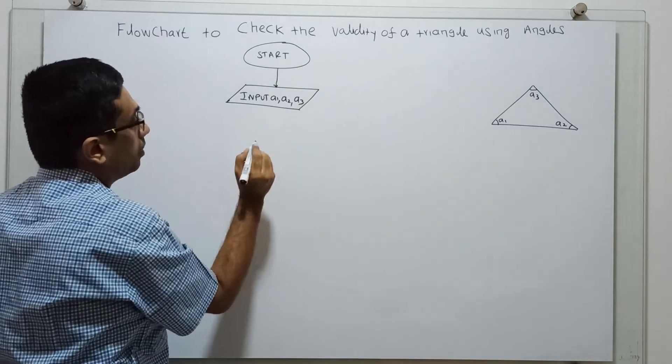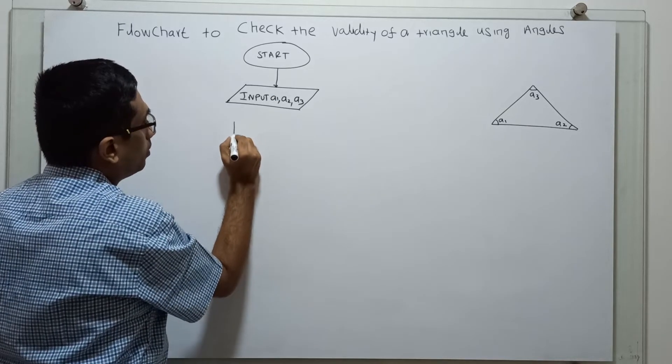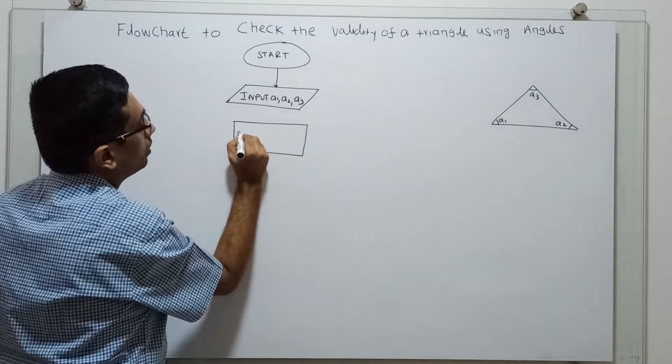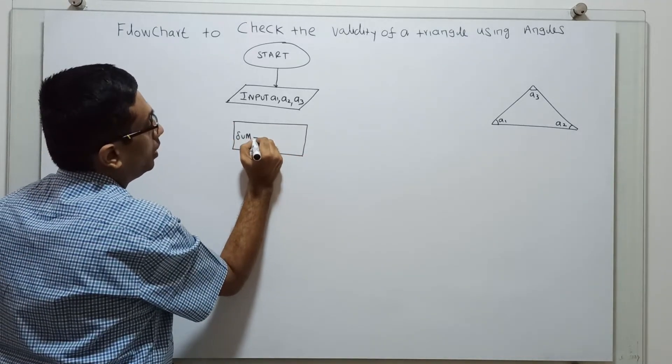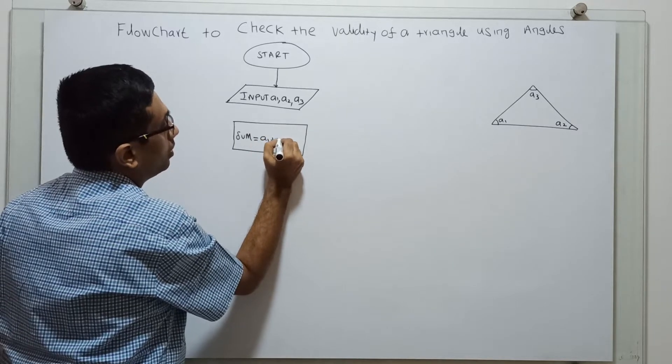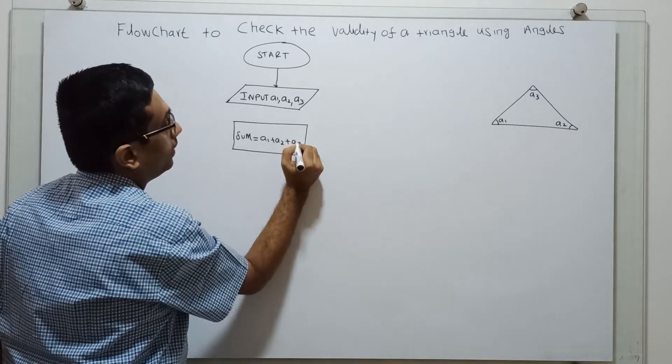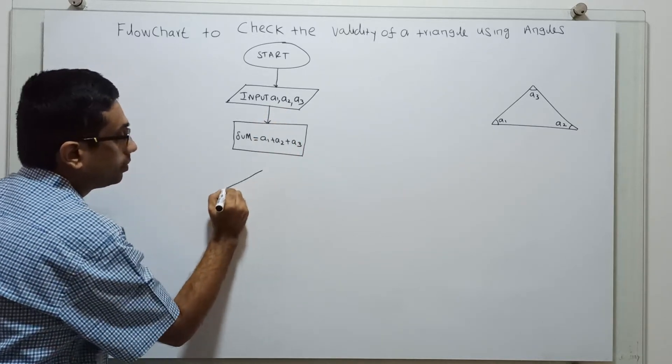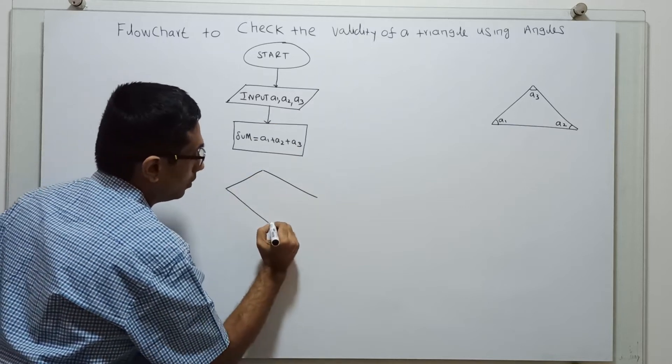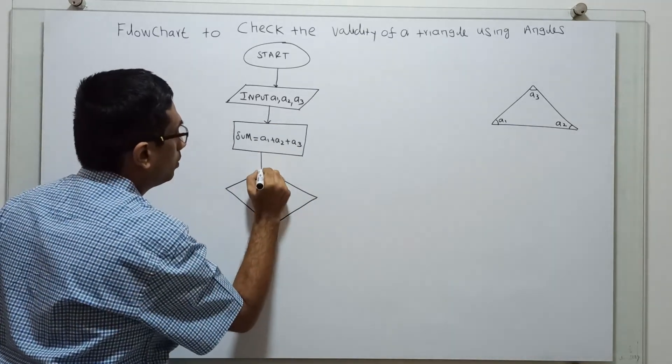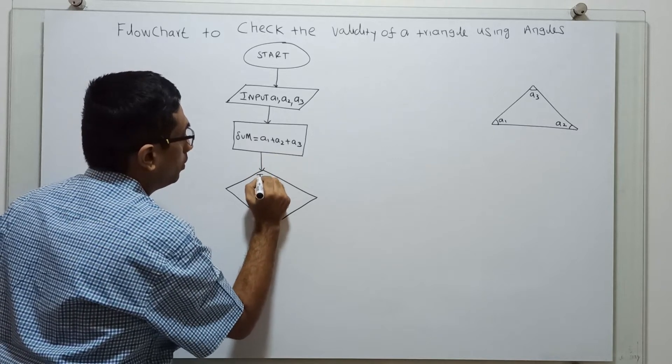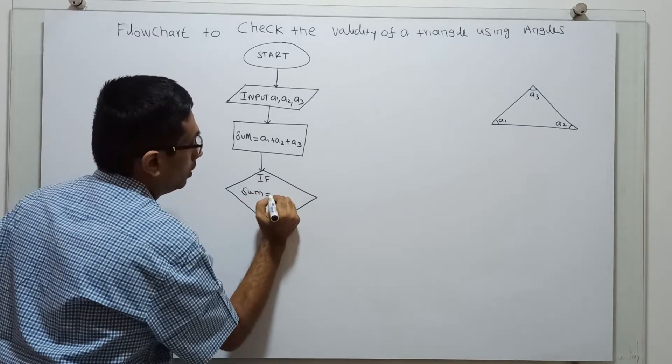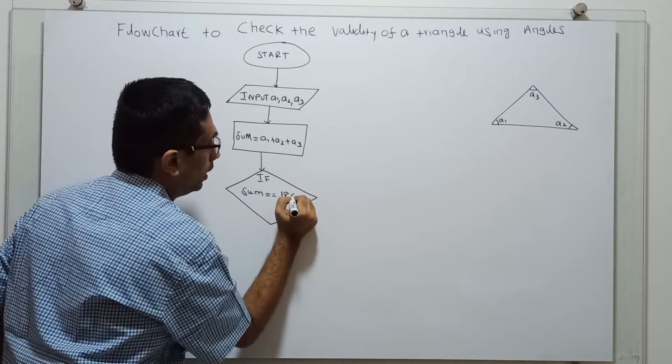Now I am calculating the sum of three angles. Sum equal to a1 plus a2 plus a3. I am checking if sum equal to 180.